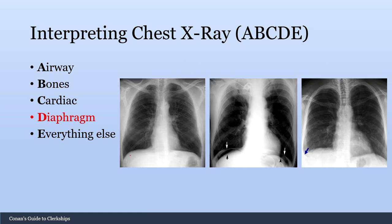D is for diaphragm. On a normal film the diaphragm has a clean appearance. Free air under the diaphragm is concerning for a perforated viscus or perforated bowel. Blunting of the costophrenic angle — costo referring to your rib and phrenic to your diaphragm — is representative of a pleural effusion. You should normally see sharp costophrenic angles, so blunting is diagnostic of a pleural effusion.